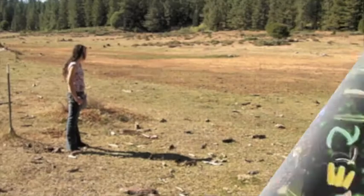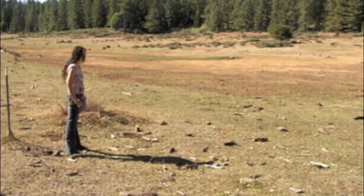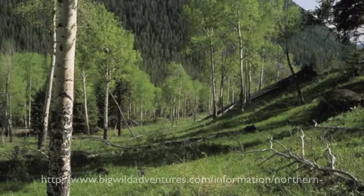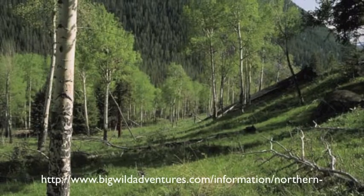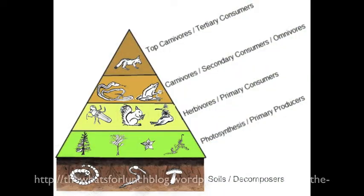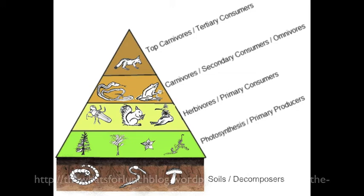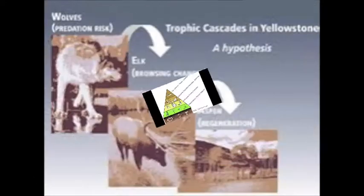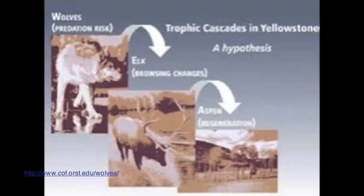Biodiversity — the difference between this and this. But how does a forest ecosystem come to be diverse? One way to explain the relationship between organisms and an environment is with a trophic cascade diagram. A trophic cascade diagram shows the flow of energy or total biomass in a particular ecosystem.